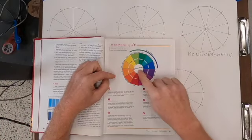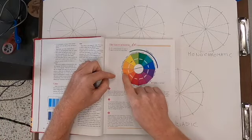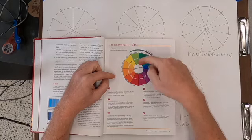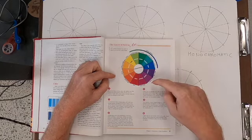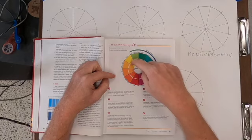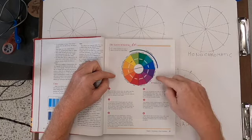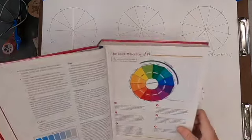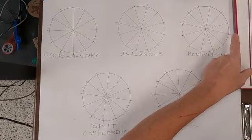Complementary are any ones that are on the complete opposite side. Opposite of orange is blue, opposite of green is red, opposite of violet is yellow. So long as you go directly straight across you're good. I'm going to do orange and blue because those are my favorites.